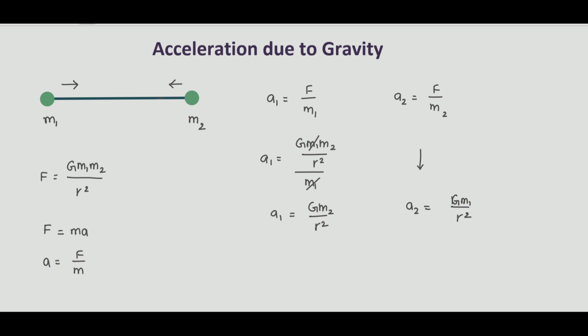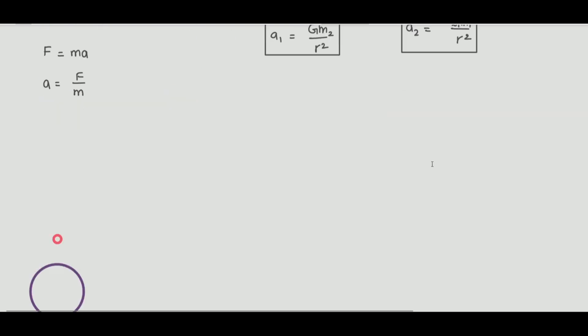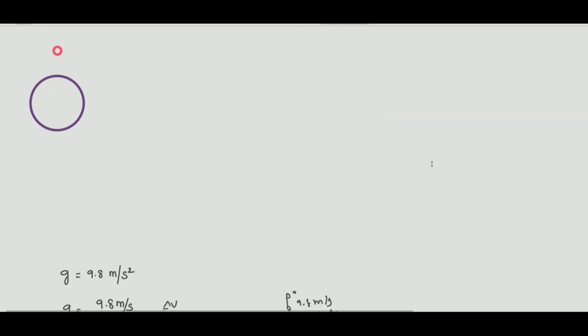Similarly, a2 equals G m1 by r square. These are the accelerations of the two masses when there is gravitational force of attraction between them and their bodies are free to move: a1 equals G m2 by r square, and a2 equals G m1 by r square.